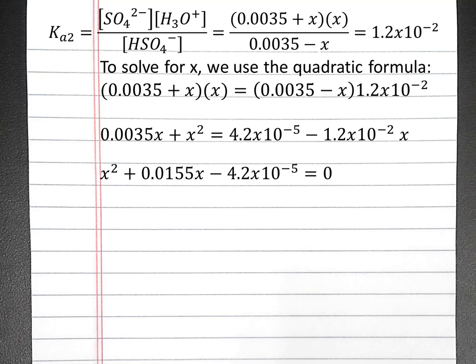Then, we need to bring all of the terms to one side of the equation. So we'll subtract 4.2 times 10 to the negative fifth, and we'll add 1.2 times 10 to the negative second x. Now our quadratic equation is in the form needed for the quadratic formula. x equals negative b plus or minus the square root of b squared minus 4ac divided by 2a. And here, a will be equal to 1, b will be equal to 0.0155, and c will be equal to negative 4.2 times 10 to the negative fifth.